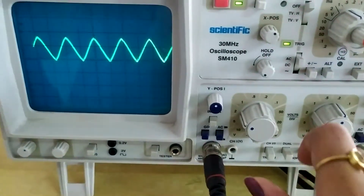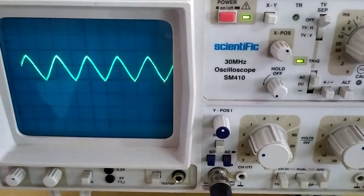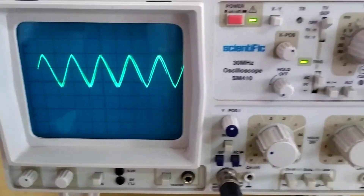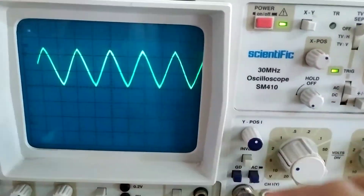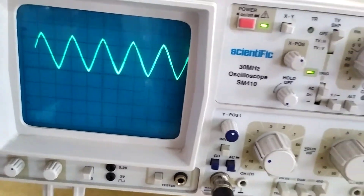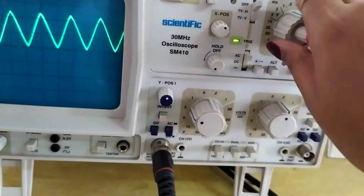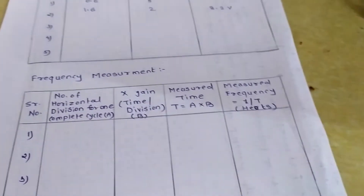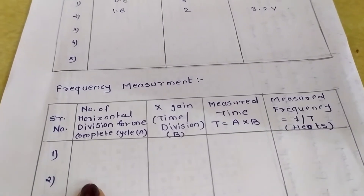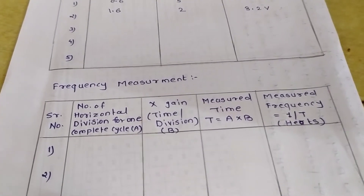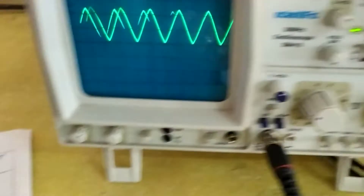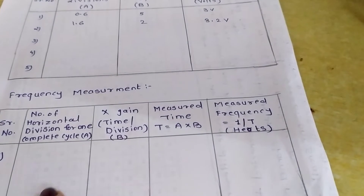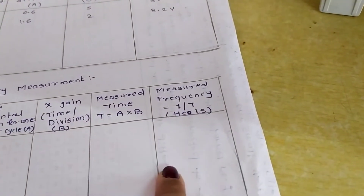Likewise, we will change the amplitude value and measure again. We will first measure the amplitude value, then we will measure for frequency. For the frequency table, we record the number of horizontal divisions for one complete cycle, then the time per division knob value. We multiply A and B to get the time period, and use that to find the frequency in hertz.